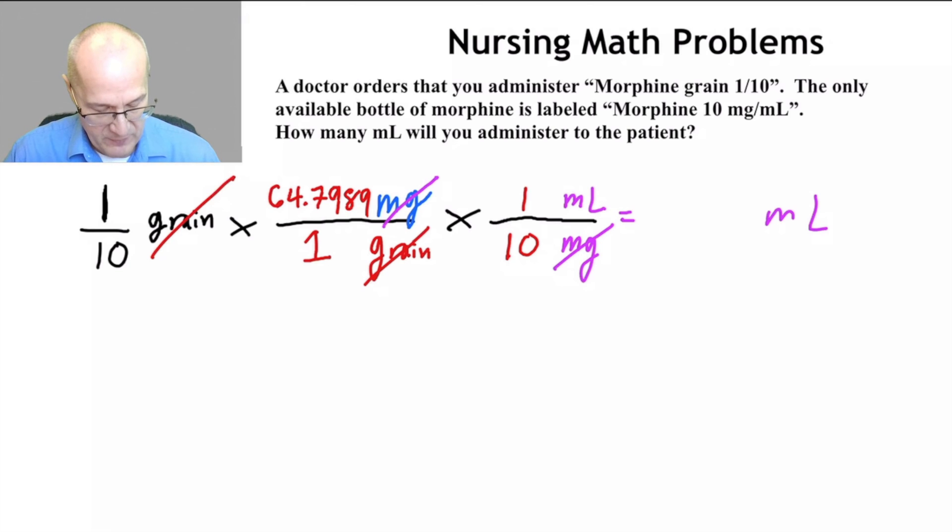You grab your handy dandy calculator and you just do the math. So 1 multiplied by 64.7989 multiplied by 1 again. All I did was I multiplied through the numerator. Now divide by the denominator. Divide by 10, divide by 1, divide by 10 again. And the answer the calculator gives me is 0.6479 and so on.